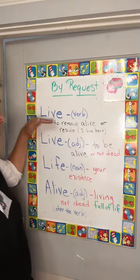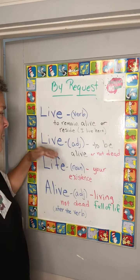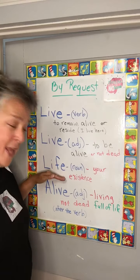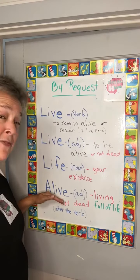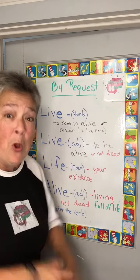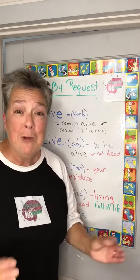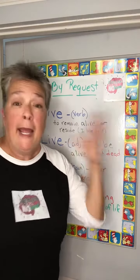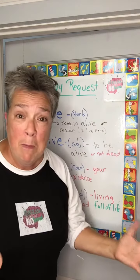Let's review: Live, the verb. Live, the adjective. Life, the noun. Alive, the adjective — comes after the verb. Why are they so confusing, so close, and so messy?